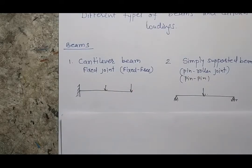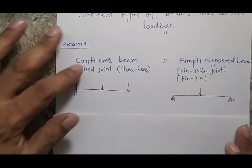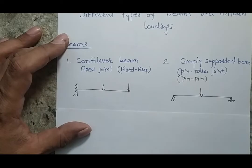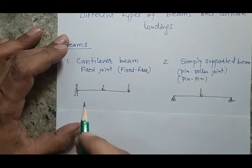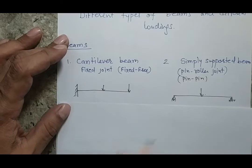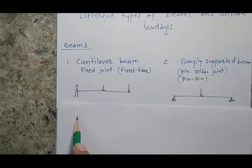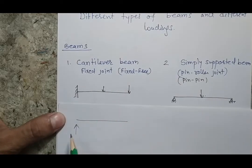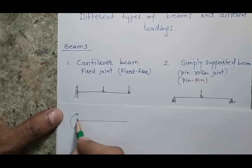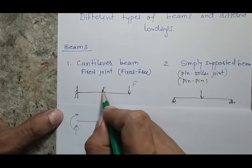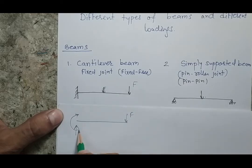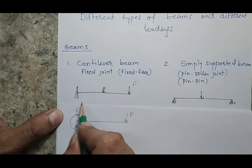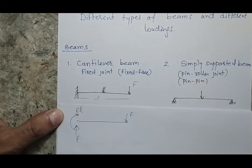In the case of a cantilever beam, you may have already studied this in mechanics. In case of a fixed beam, if you are interested to find the reaction at the fixed point, the reaction will be a combination of two types: one is a force and another is a moment. So if this force is F and the length is L, we are going to have a force F and a moment F·L at the fixed end.